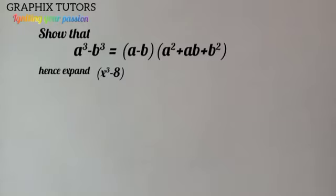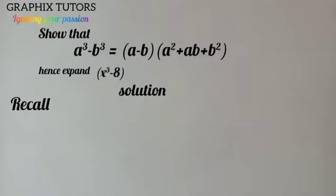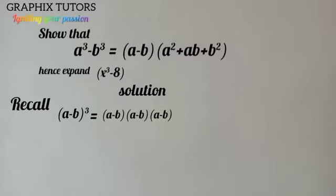Solution: Recall we know that a cube minus b cube can be found in (a minus b) cubed. If I expand this, it means having a minus b in brackets multiplied by a minus b in brackets multiplied by another a minus b in brackets — that is, a minus b in three places because it has the power of three.